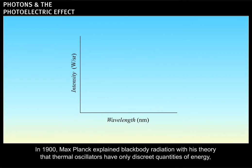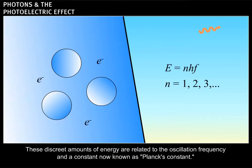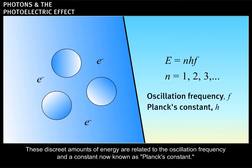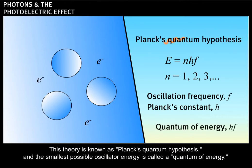In 1900, Max Planck explained black body radiation with his theory that thermal oscillators have only discrete quantities of energy, rather than the continuous distribution indicated by classical theory. These discrete amounts of energy are related to the oscillation frequency and a constant now known as Planck's constant. This theory is known as Planck's quantum hypothesis and the smallest possible oscillator energy is called a quantum of energy.